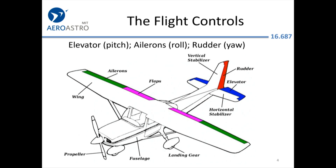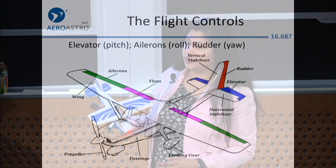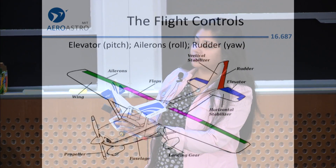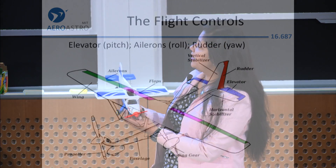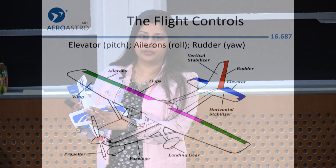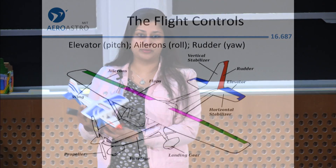We talked yesterday about the different control surfaces of an airplane. This figure uses color to make it clearer where all those control surfaces are. On the outer parts of the wing, shown in green, you can see the ailerons, which control the roll motion of the airplane. The flaps are shown in purple and are closer in. When we talk about extending or lowering the flaps, that's what we discussed on the whiteboard — increasing lift but also drag when we lower the flaps.